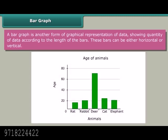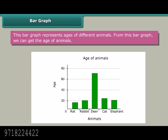Bar graph: A bar graph is another form of graphical representation of data showing quantity of data according to the length of the bars. These bars can be either horizontal or vertical. This bar graph represents ages of different animals. From this bar graph we can get the age of animals.